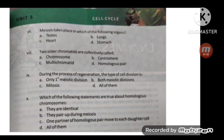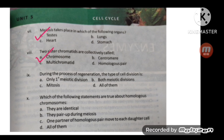Meiosis takes place in which of the following organs? The correct option is A — testes. Next MCQ: two sister chromatids are collectively called a chromosome. During the process of regeneration, the type of cell division is mitosis.